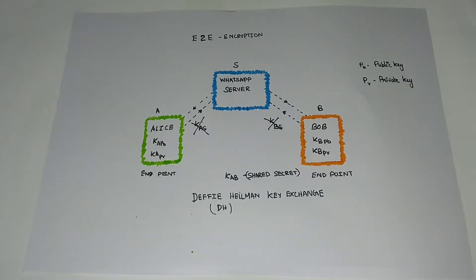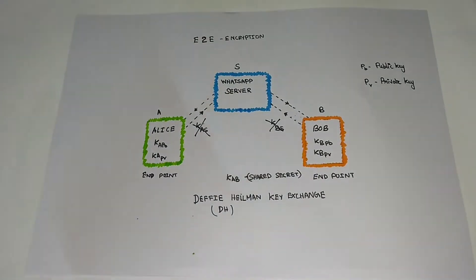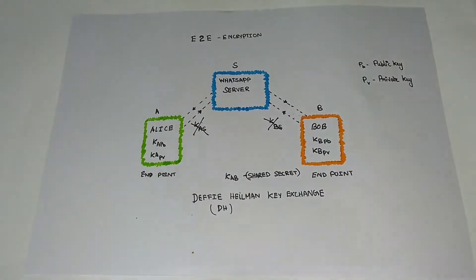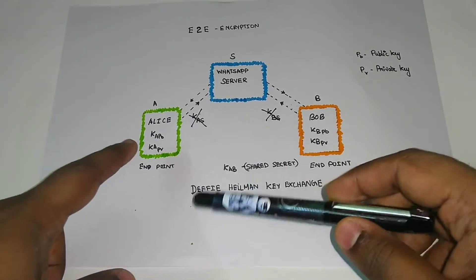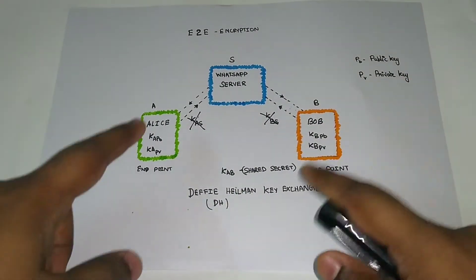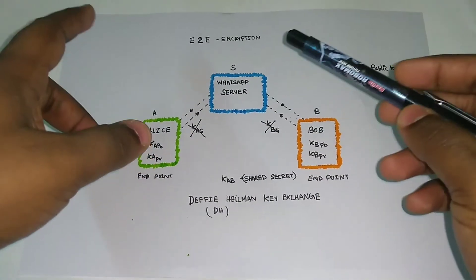This is a simple diagram explaining what is happening with WhatsApp end-to-end encryption. For the classic example in networking, we use two characters — Alice and Bob. Alice and Bob are two WhatsApp users who are using WhatsApp on their mobile device, desktop, or laptop.